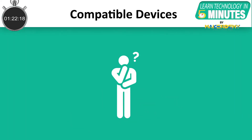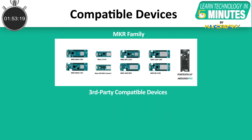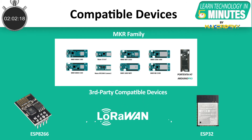Which devices can be connected to the Arduino IoT Cloud? All the Arduino manufactured devices that can be connected to the cloud are compatible with the Arduino IoT Cloud. These devices include MkR Wi-Fi 1010, MkR 1000 Wi-Fi, MkR WAN 1300, MkR WAN 1310, MkR GSM 1400, MkR NB 1500, Nano 33 IoT, Nano RP2040 Connect, and Portenta H7. Apart from the Arduino manufactured boards, Arduino IoT Cloud also supports third-party devices such as the ESP8266, ESP32, and LoRaWAN modules.